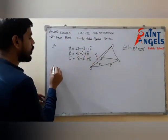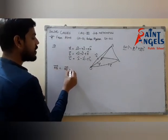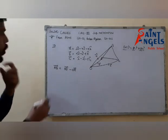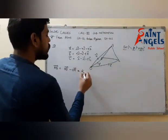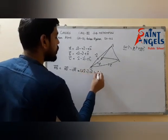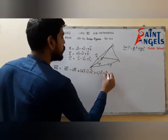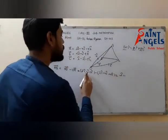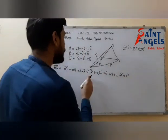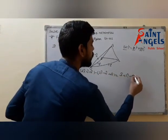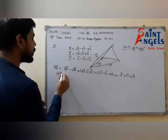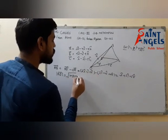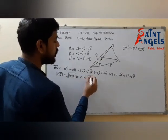Side AB vector = OB vector minus OA vector = vector B minus vector A = (2I minus 3I) I-cap + (minus J plus 4J) 3J-cap + (K plus 4K) 5K-cap, giving AB = minus I-cap plus 3J-cap plus 5K-cap. The magnitude of AB = under root of (1 + 9 + 25) = under root 35.